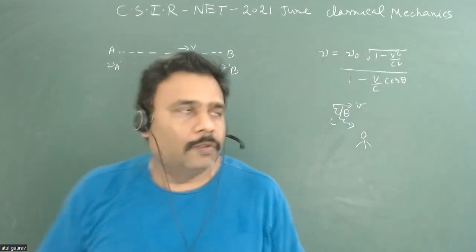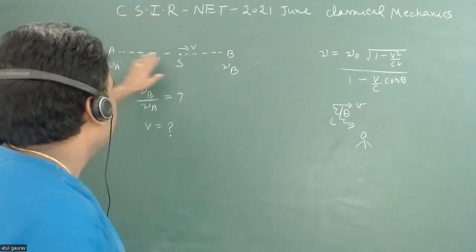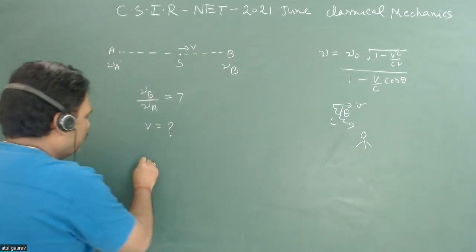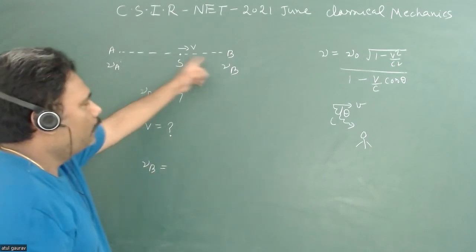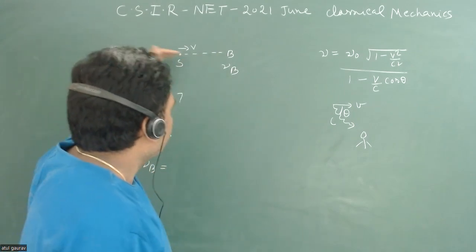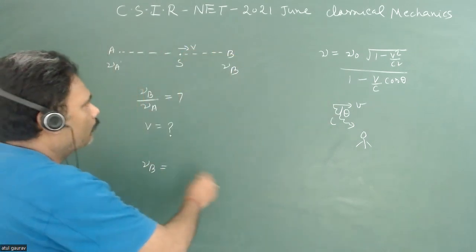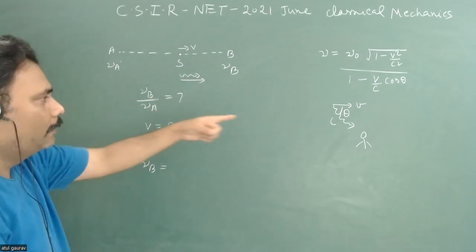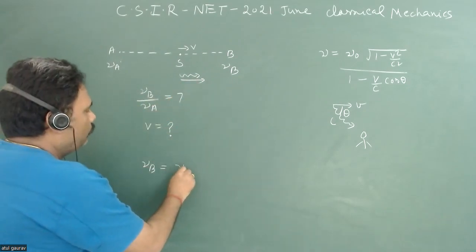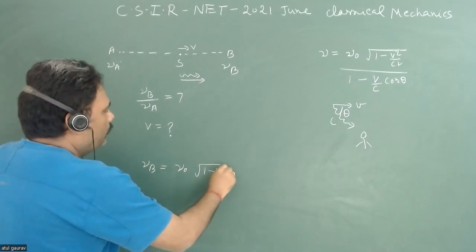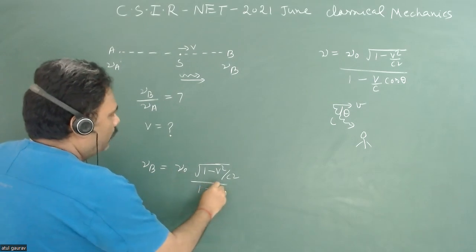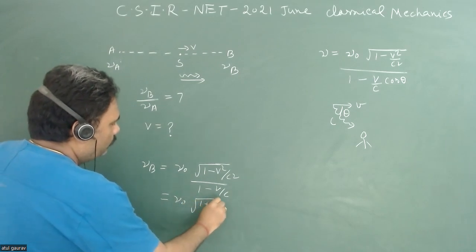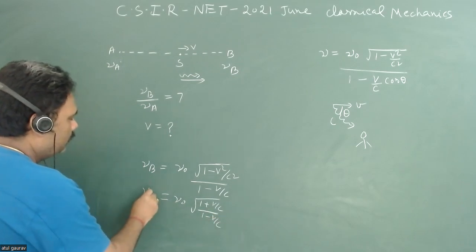Since the source and observer B are on the same line and the source is moving towards B, θ is equal to zero. So ν_b = ν₀ · √(1 - v²/c²) / (1 - v/c), which simplifies to ν₀ · √((1 + v/c) / (1 - v/c)). This is your ν_b.